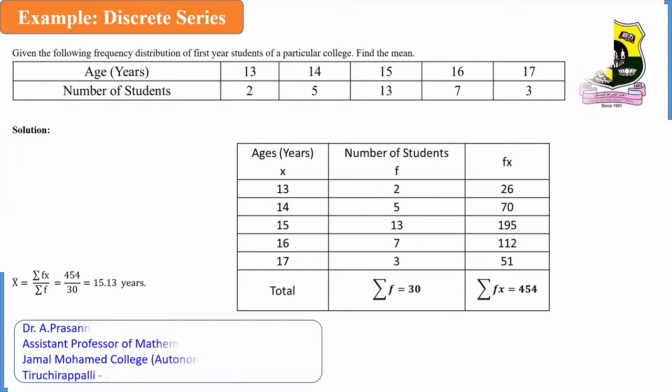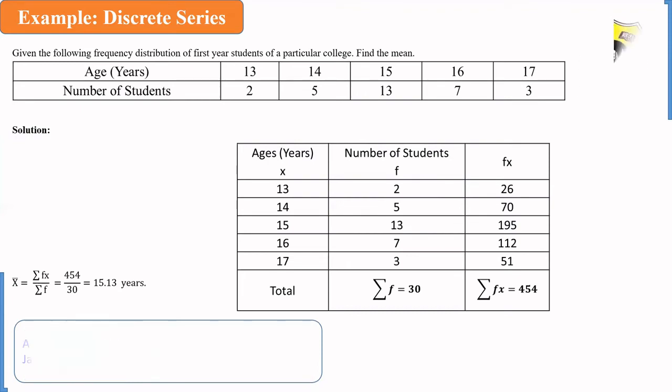For solving this, we prepare the following table to execute further. So, age is considered as x, number of student is f. So, we find the value of f into x: 13 into 2 is 26, 14 into 5 is 70, 15 into 13 is 195.